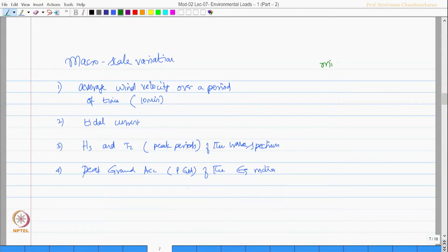Coming to micro scale variation, in this case the variation is so minimum it causes sufficient impact on the response. So interestingly friends, micro scale variation actually gives rise to dynamic effects.